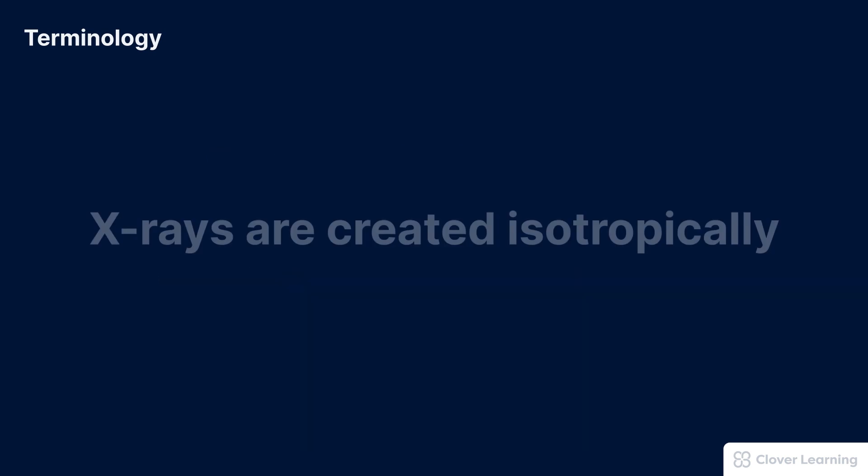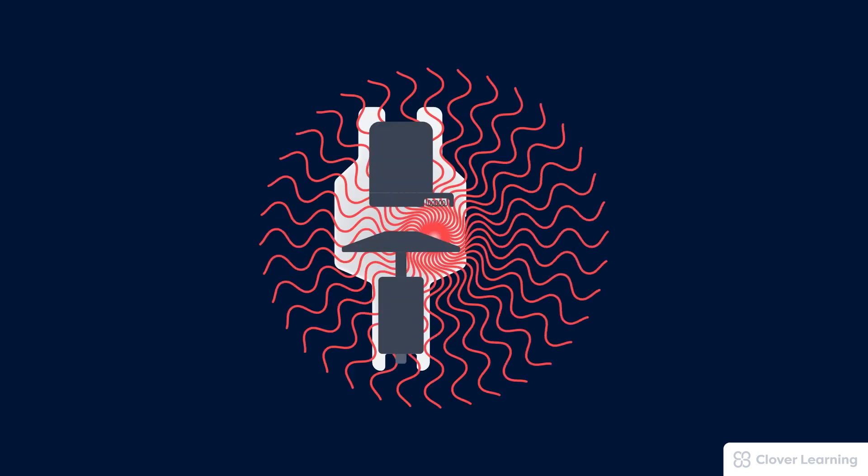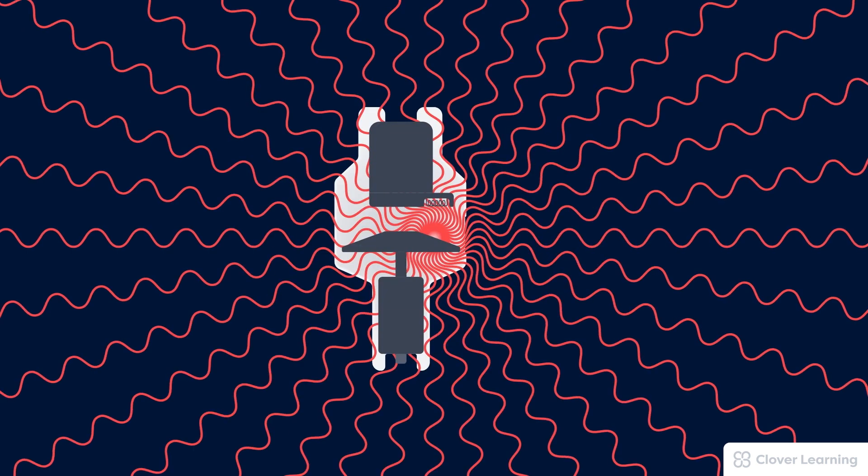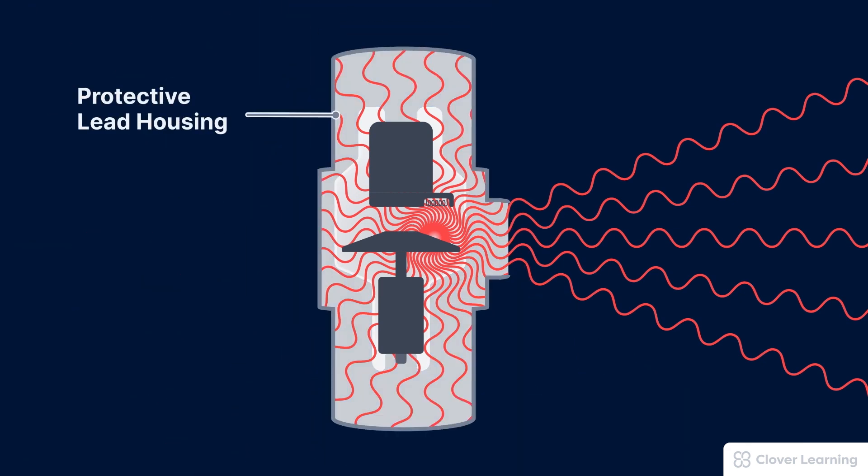Finally, one more thing we should know about x-rays is that when they're created in the x-ray tube, they are created isotropically. Isotropic means that x-rays diverge equally in all directions. In fact, this is exactly why the x-ray tube assembly requires a protective lead housing. The lead housing absorbs all of the extra x-ray photons that we don't actually need. X-rays travel in straight lines, so they will keep on going until we put something in the way to stop them.